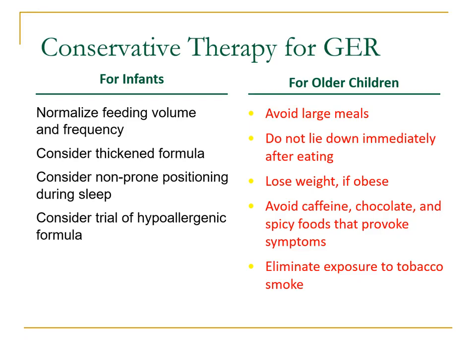For young infants with reflux, conservative management includes normalizing feeding volume and frequency — if the baby is taking larger volumes than needed, reducing volumes and spacing feeds may help. Consider thickening the formula using anti-regurgitation formula, which is a physical intervention since more thickened formula is less likely to reflux from the stomach.